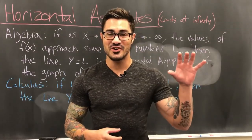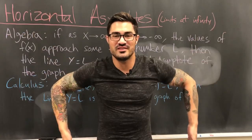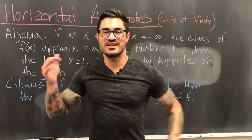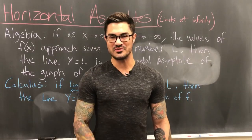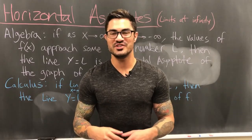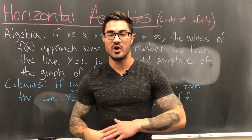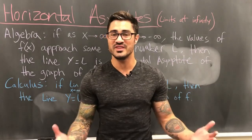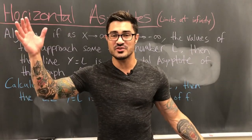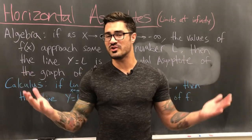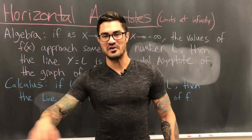With polynomials, end behavior is determined by the leading term — positive even degree, negative even degree, and the odd degrees each behave differently. But when we're dealing with horizontal asymptotes, we're usually dealing with a rational function — a polynomial over a polynomial. With these, as far as end behavior goes, we could have a horizontal asymptote, a slant or oblique asymptote, or no asymptote at all. We'll save vertical asymptotes for their own video.